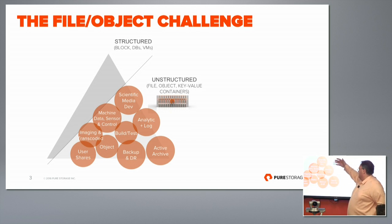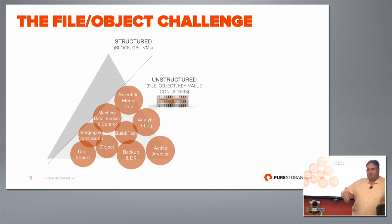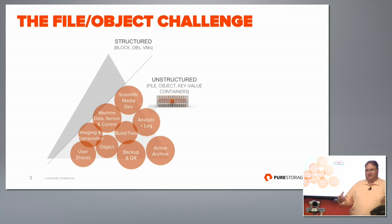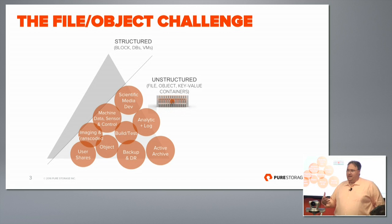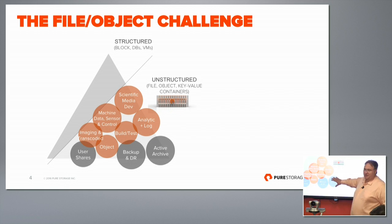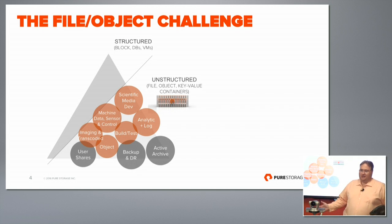It's built around scientific data, analytic data, log data, build tests, sensor data. We're seeing backup, DR, object, imaging, transcoding. These are data sets that are born digital, largely. They don't originate from humans — they come from machines. They scale with Moore's law, not really with GDP. They are analyzed and interacted with by machines, creating outputs that humans interact with. And they're growing tremendously differently.